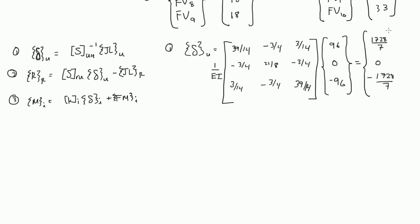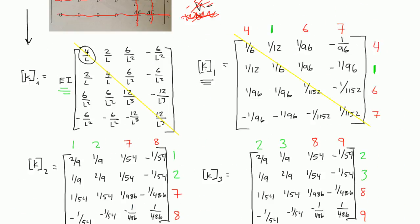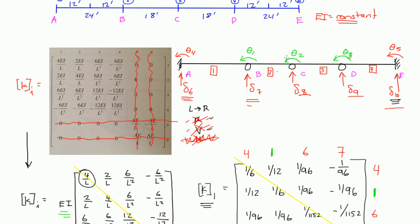These are the deformations happening at the unrestrained degrees of freedom, all over EI. These are the deformations at degree of freedom number 1, 2, and 3. So for 1 we have 1728/7 divided by EI, for number 2 we have 0, and for 3 we have negative 1728/7 over EI.